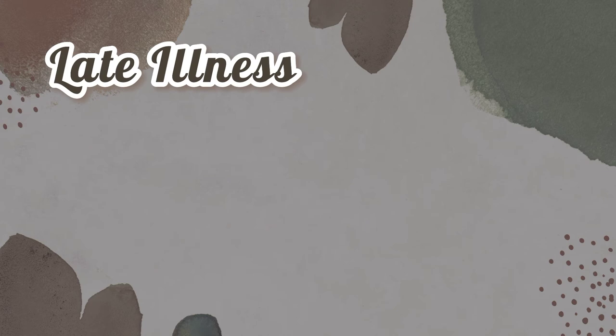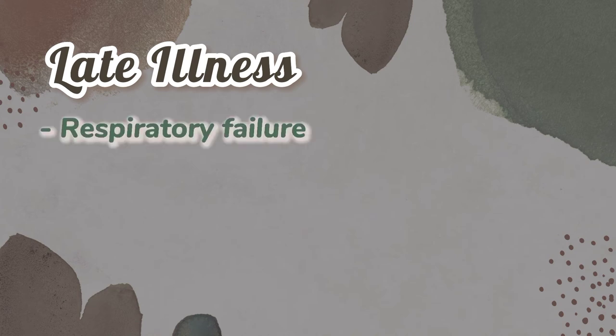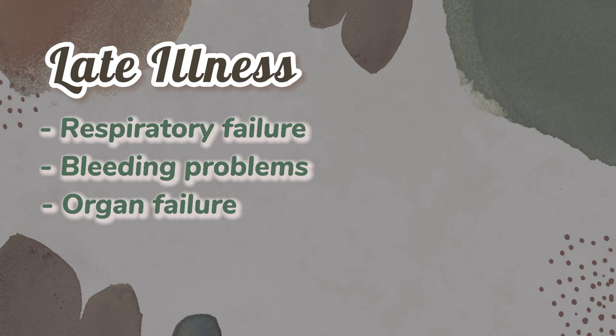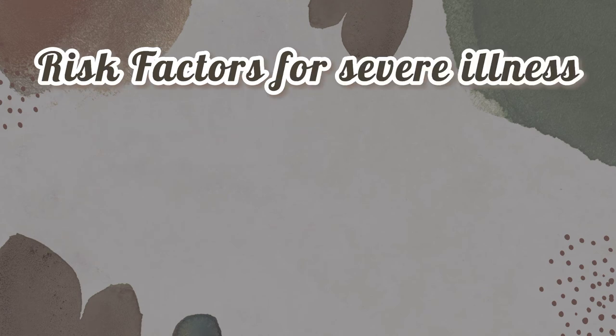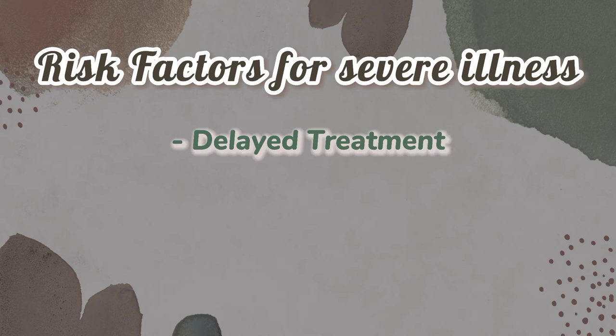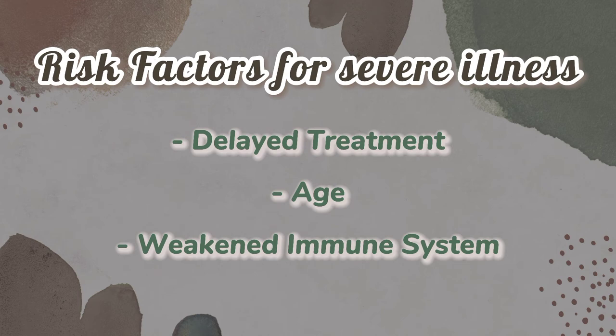For delayed illness, rarely, if treatment is delayed or if other medical conditions are present, anaplasmosis can cause severe illness. Prompt treatment can reduce your risk of developing severe illness. Signs and symptoms of severe illness can include respiratory failure, bleeding problems, organ failure, and even death. Risk factors for severe illness include delayed treatment, age — being older puts you at risk — and a weakened immune system, including people receiving some cancer treatments, individuals with advanced HIV infection, prior organ transplants, or people taking certain medications.